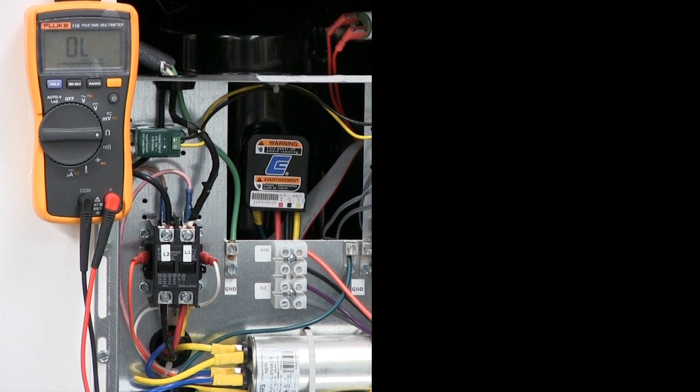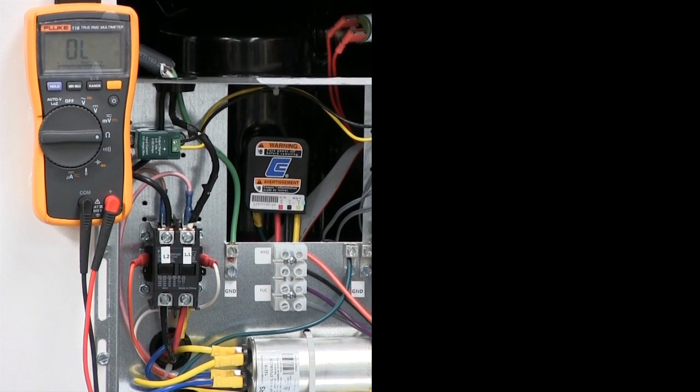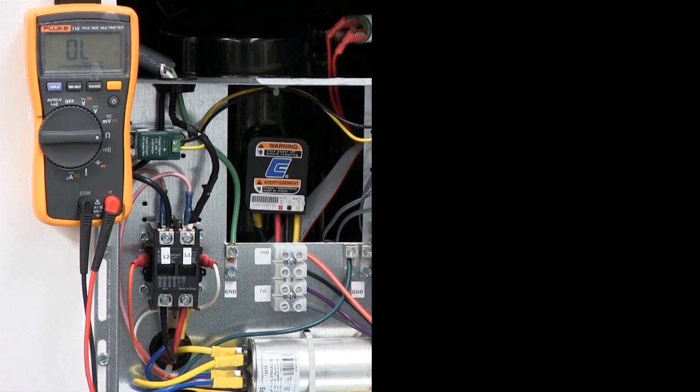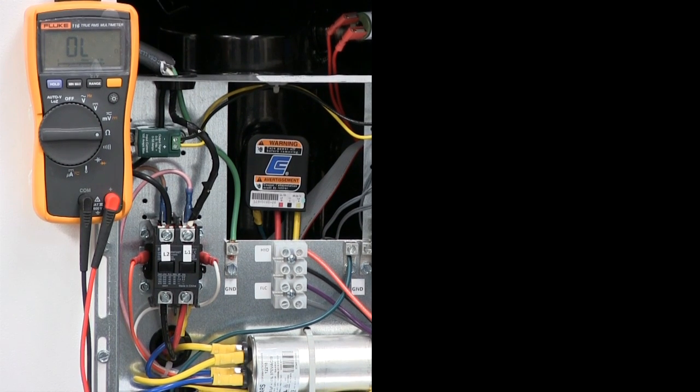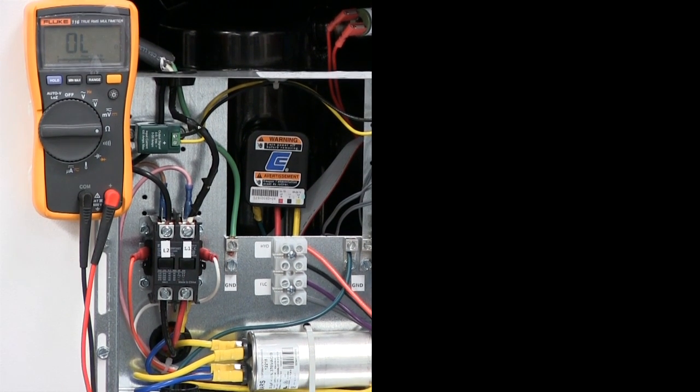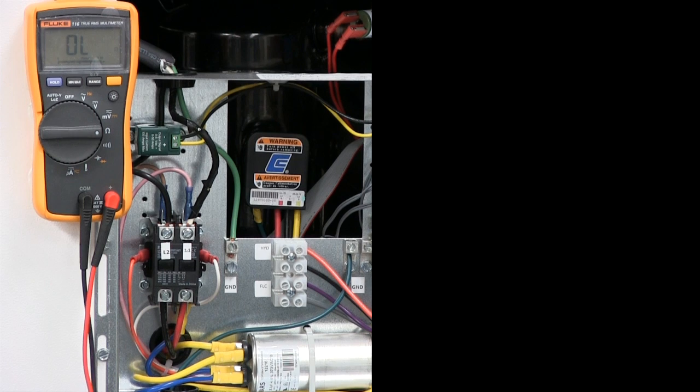To check the compressor windings, the first thing you'll want to do is make sure there's no power applied to the unit. Power would be coming in from L1 and L2. I've already checked to see that there's no voltage and the disconnect is disengaged. So we're good to go to check the compressor windings, making sure that you have the proper arc flash equipment is a good idea whenever you have your hands inside an electrical box.